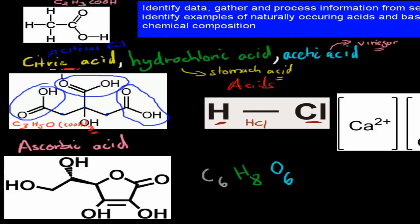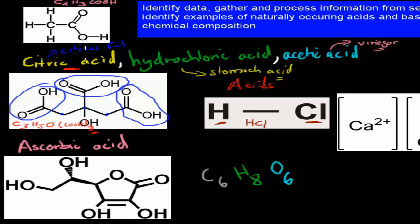So we mentioned these are the three. These are already straightforward — you should have heard of citric acid, hydrochloric acid, and acetic acid before. Now we've quickly gone over what kind of things they are used in as well: citric acid in citrus fruit, hydrochloric acid in stomach acid, and acetic acid in vinegar.